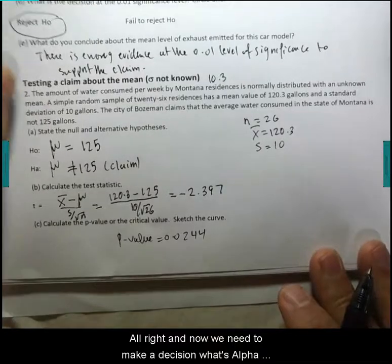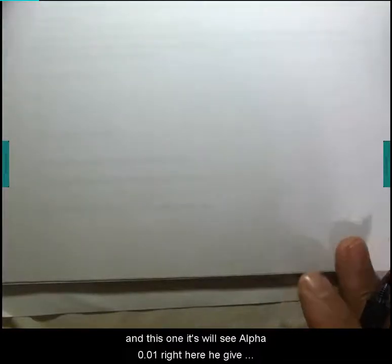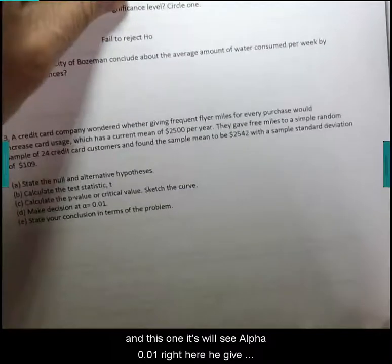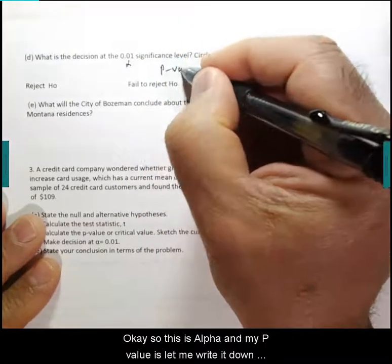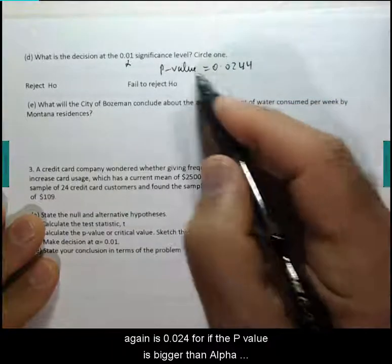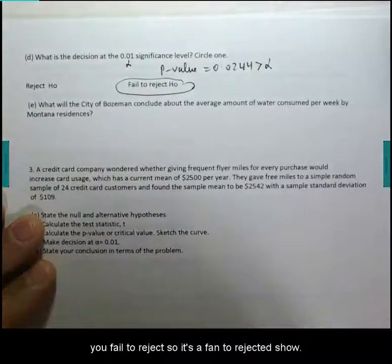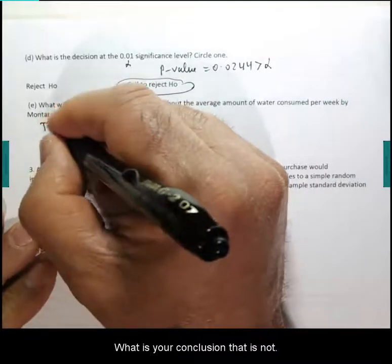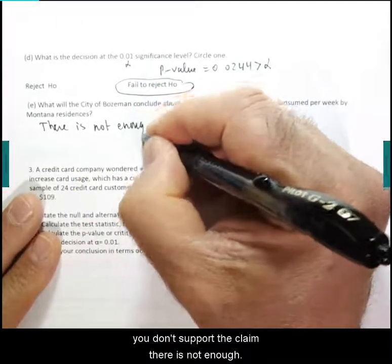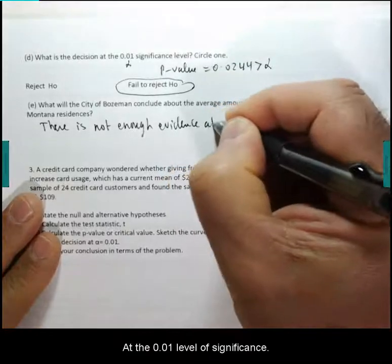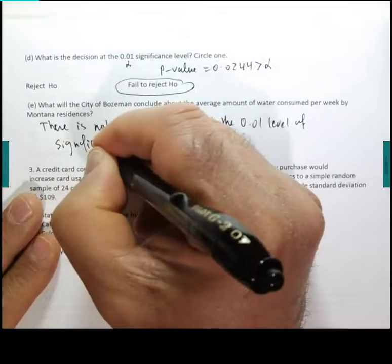Now we need to make a decision. Alpha in this one is 0.01. This is alpha and my p-value is 0.0244. If the p-value is bigger than alpha, you fail to reject H0. What is your conclusion? There is not—when you fail to reject H0 and your claim is in H1, you don't support the claim. There is not enough evidence at the 0.01 level of significance to support the claim.